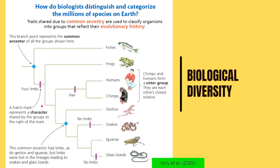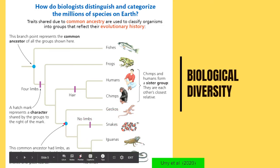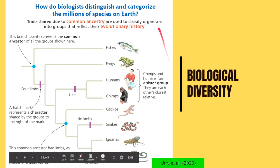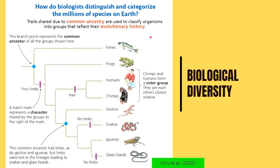At this point, this group of organisms evolved to have hair — those are your humans, chimps, and other related groups. Some of the geckos and this group had a common ancestor, but the group of snakes evolved to have no limbs, and the same is true of glass lizards, while iguanas retained their limbs. This is how biologists visualize common ancestry as reflected in evolutionary history — how they categorize, identify, organize, and classify living things based on similar traits and common ancestry.